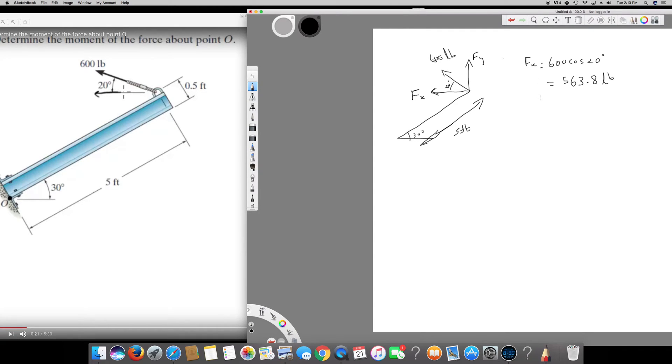And the next one is Fy. Fy is equal to 600 sine 20. If I put it in the calculator it gives us 205.2 pounds.